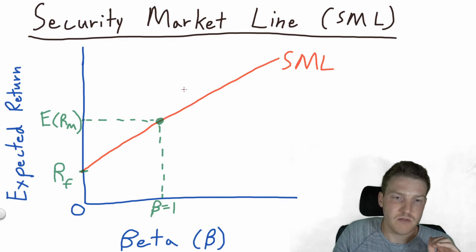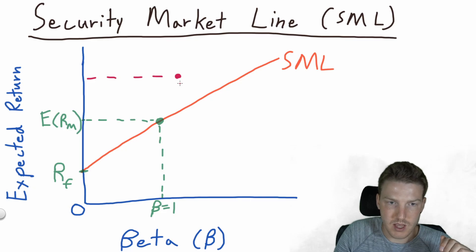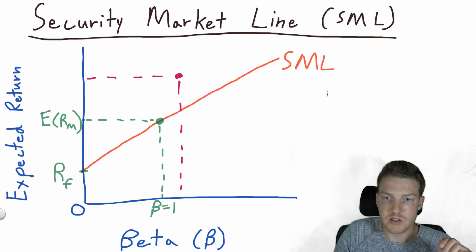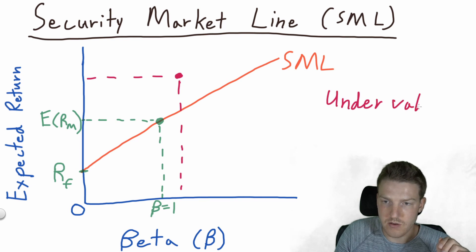So this is also used as a valuation tool. So let's say an asset actually returns about this much. So the asset returns this much and it has this much beta. Well, this asset is above the orange line, right? It's above the security market line. So it is undervalued. So that red dot is undervalued.